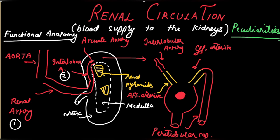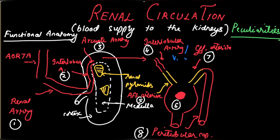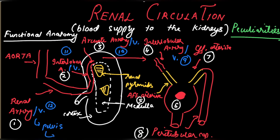So the arterial path is: renal artery → interlobar artery → arcuate artery → interlobular artery → afferent arteriole → glomerular capillaries → efferent arteriole → peritubular capillaries. From the capillaries there are two sets on the venous side: the interlobular vein, the arcuate vein, and the interlobar vein, which leads to the renal vein, then the renal pelvis, ureter, and bladder.